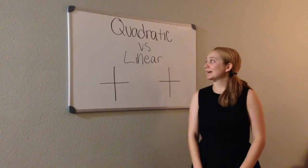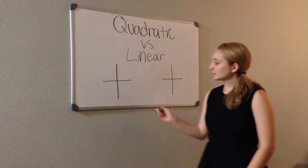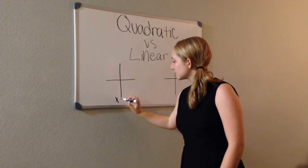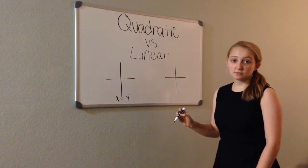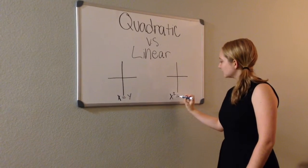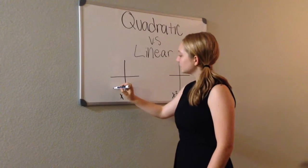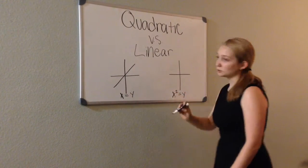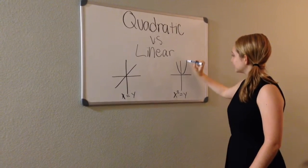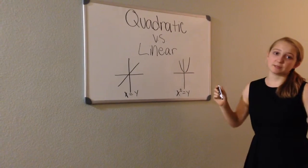Now we're going to go over quadratic functions and how they compare to linear functions. The parent function for a linear equation is Y equals X. But the parent function for a quadratic function is Y equals X squared. This is reflected on the graph by a linear function going through the origin as a straight line, while a quadratic function is a parabola — that u-shaped curve.